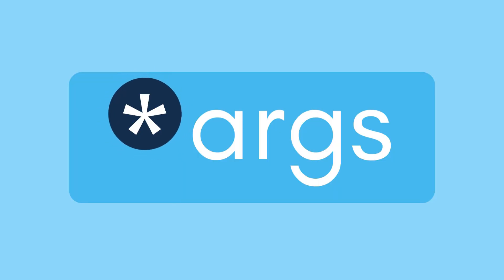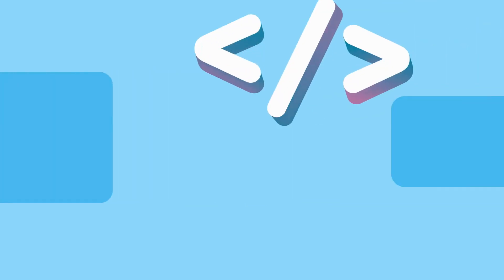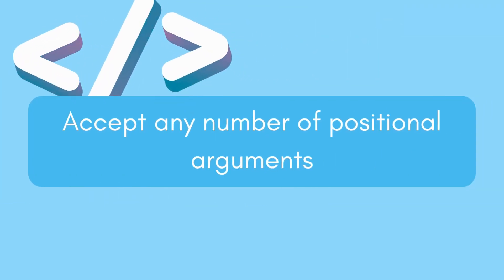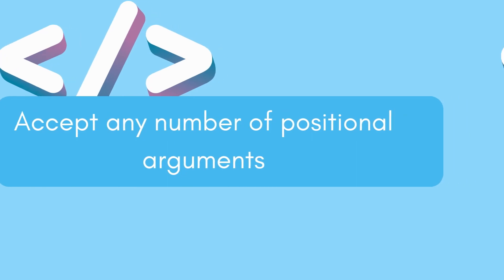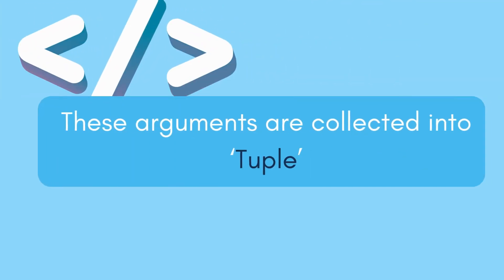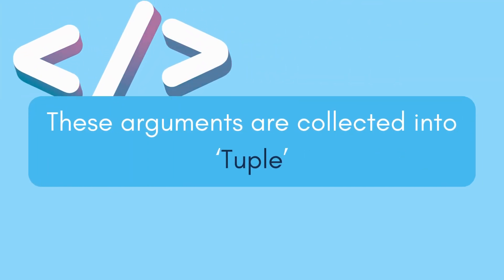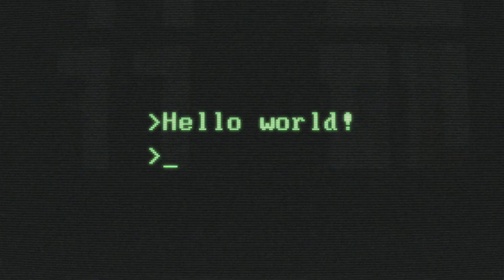Let's talk about *args first. The asterisk before args tells Python to accept any number of positional arguments. These arguments are collected into a tuple, which you can then use within your function.